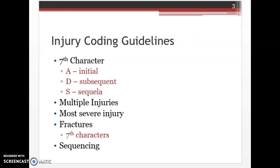Now let's look at the injury coding guidelines. Most of the codes from Chapter 19 are going to have a 7th character, so make sure you always verify your code in the tabular list and look for that 7th character. Our 7th character choices are A, D, or S. A is for initial encounter, and it's used for each encounter where the patient is receiving active treatment for the condition.